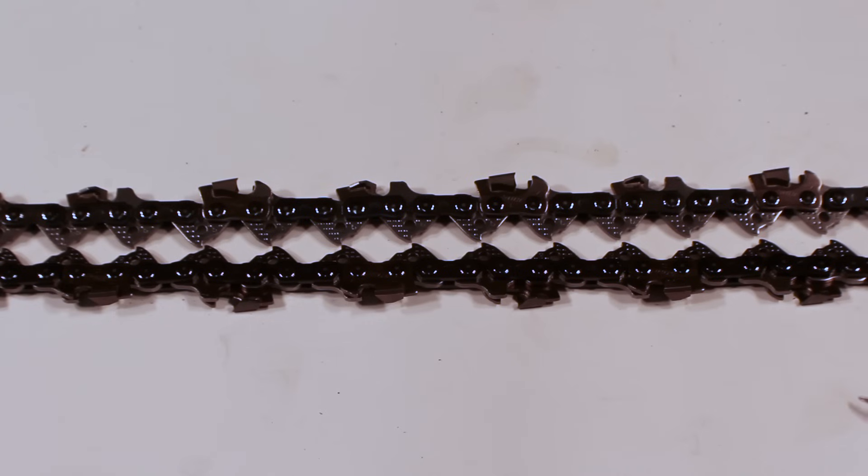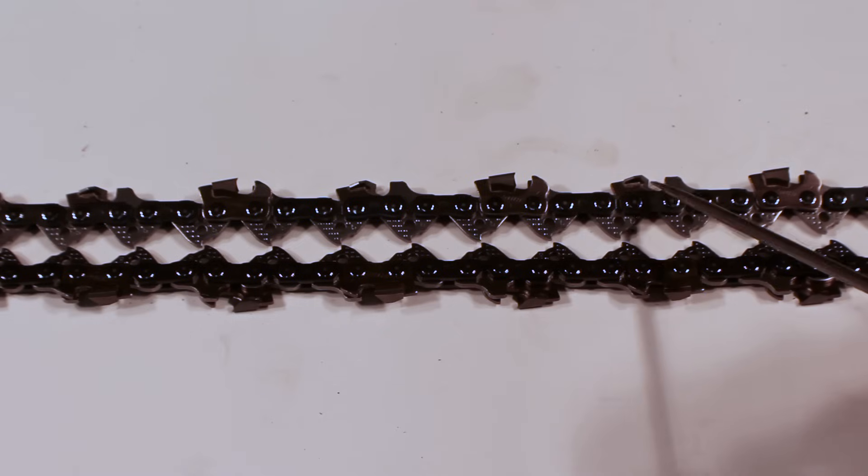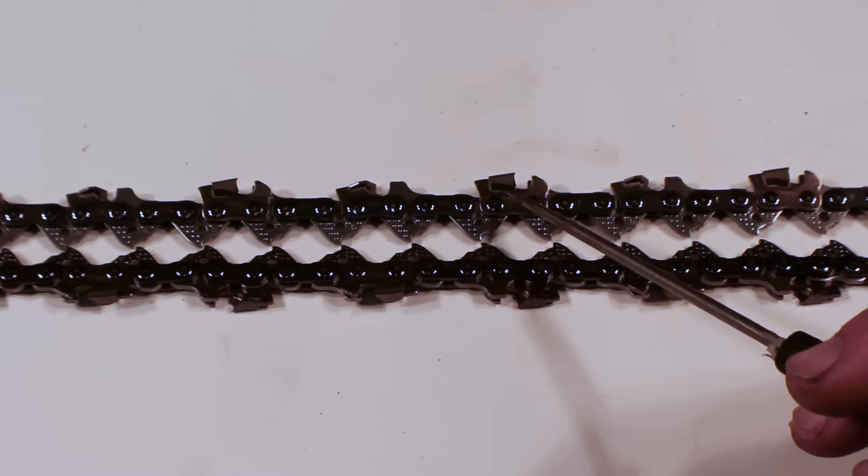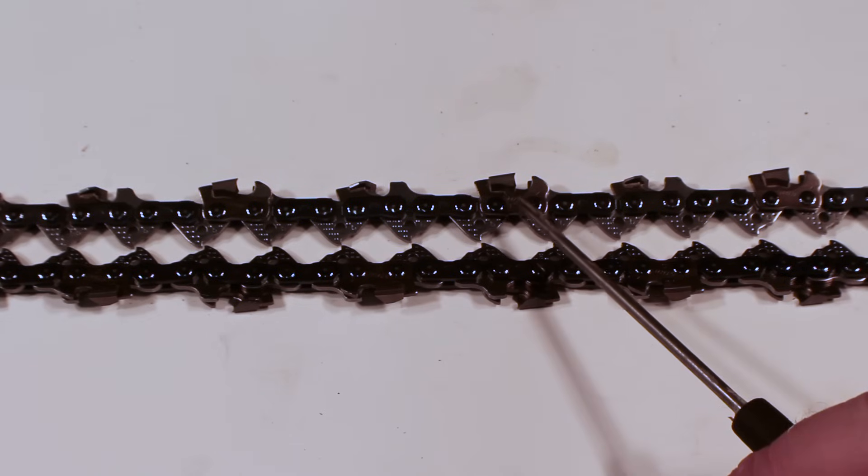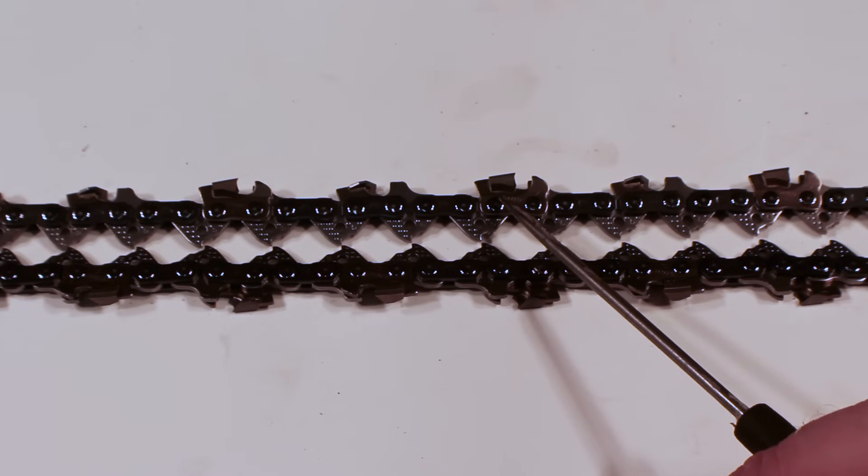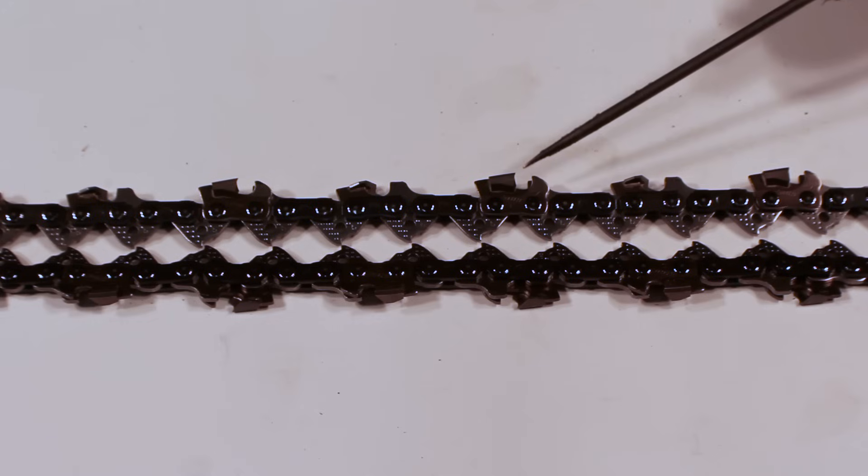Here we have something of a specialty chain. This is a standard semi chisel low kickback but it has carbide cutter heads. So this is a Stihl chain, what they call their Duro line. With that carbide cutter tooth you're going to get about four times the sharpness out of the chain before you have to sharpen it. It's going to last quite a bit longer, especially useful in real dirty situations or frozen woods. One of the downsides is that it's more expensive and also you can't sharpen this on your own without special equipment. These have to be sharpened on a diamond grinding wheel.